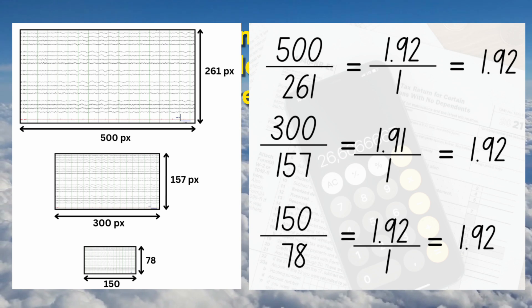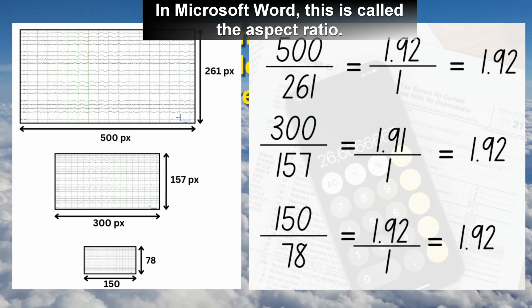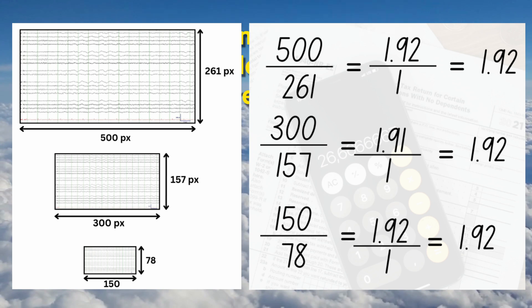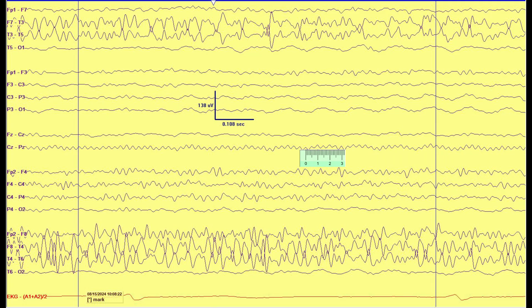If you were to calculate the duration of a particular wave, if you were to calculate the sensitivity, or if you were to calculate the time base, any type of calculations, you would be able to derive those from any of these three images because the proportion is maintained. In other words, the height divided by the width is the same for all three.